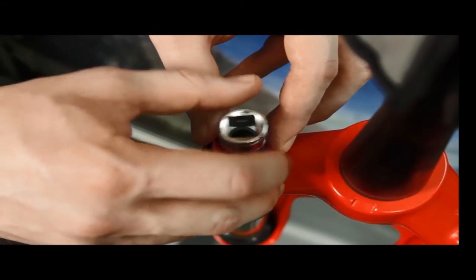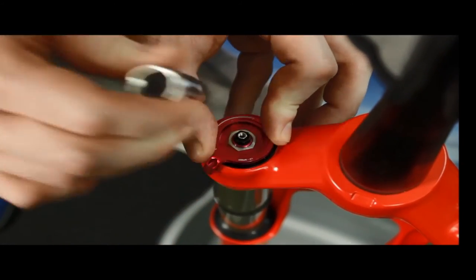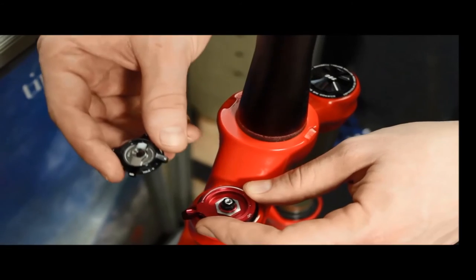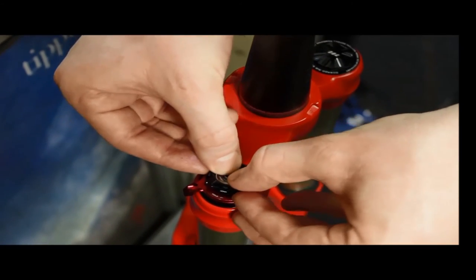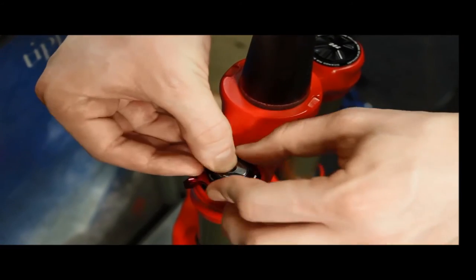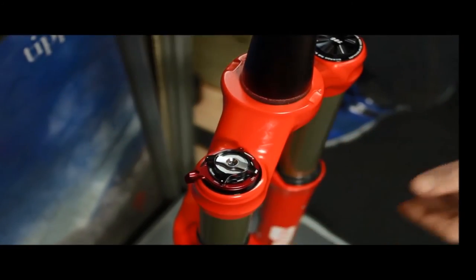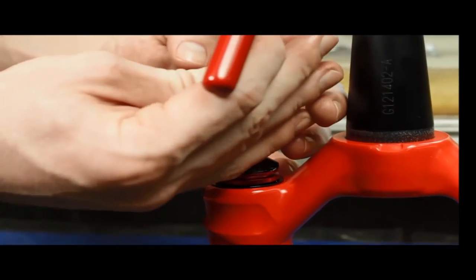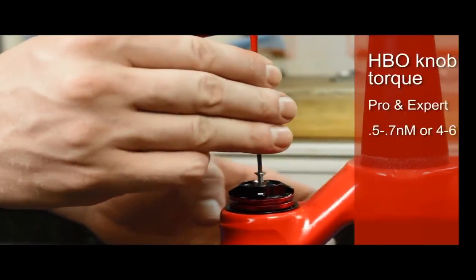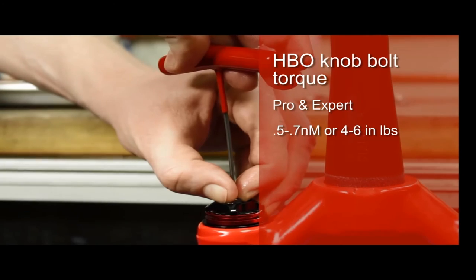Place the high speed HBO knob combo on the top of the low speed knob and snap it into place. You'll want to be sure to secure the HBO adjuster down with your thumb while installing it. Insert the knob bolt and tighten to a torque of 0.5 to 0.7 newton meters or 4 to 6 inch pounds.